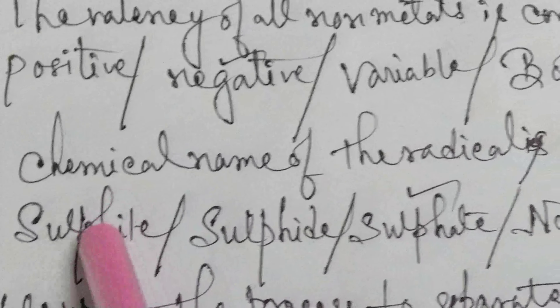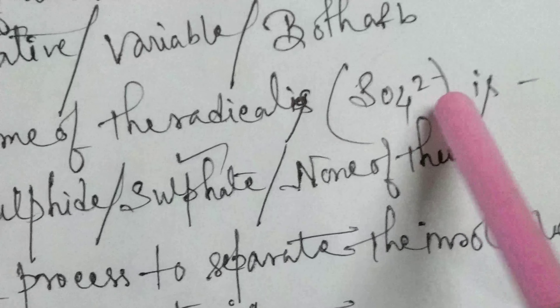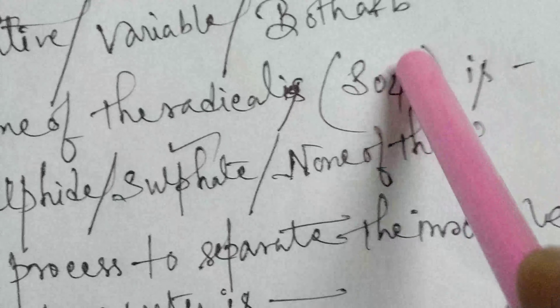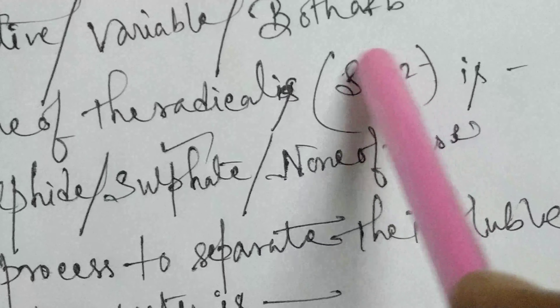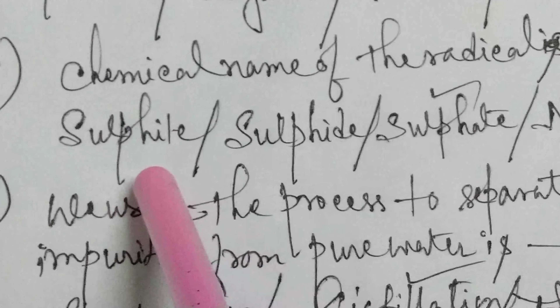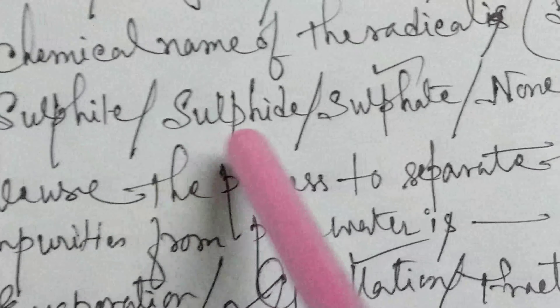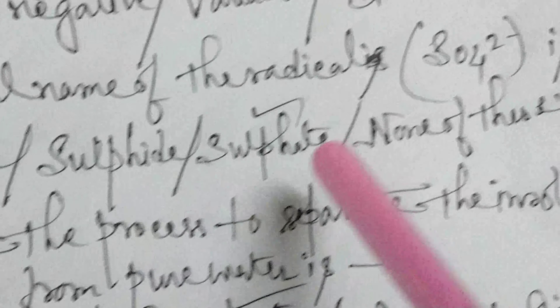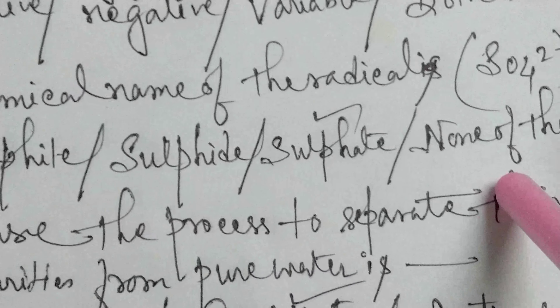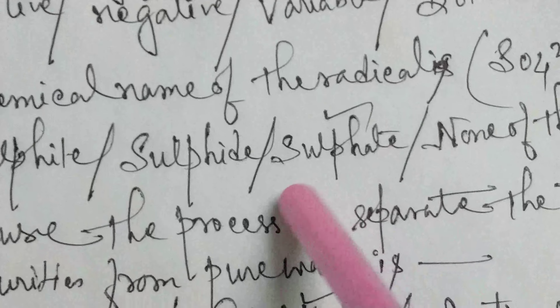The chemical name of the radical SO₄²⁻ is: sulphite, sulfide, sulfate, or none of these. The answer is sulfate.